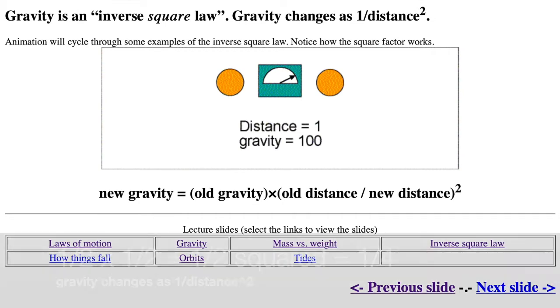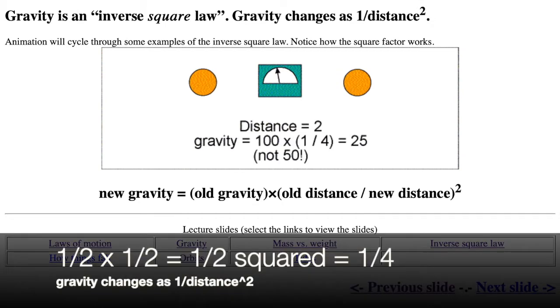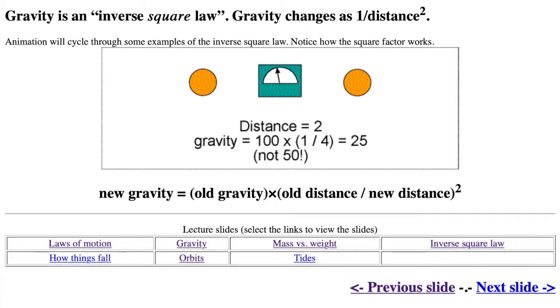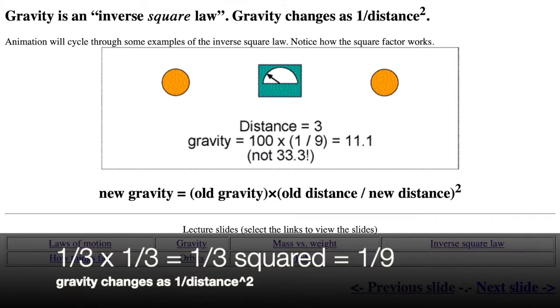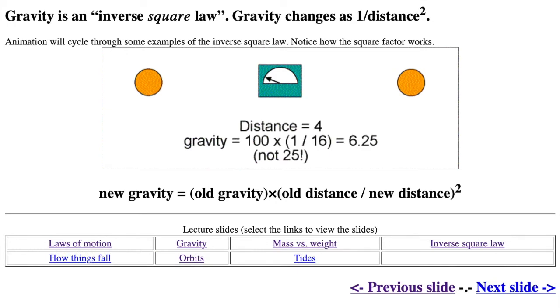If the distance is twice as big, the gravity is 1 half times 1 half equals just 1 quarter the amount. If the distance is 3 times as big, the gravity is 1 third times 1 third equals 1 ninth the amount. Notice what happens when the distance is just half as much as the original distance. The gravity force is 2 times 2 equals 4 times as much. This is why black holes are dangerous at close distances and you can get very close to a black hole.